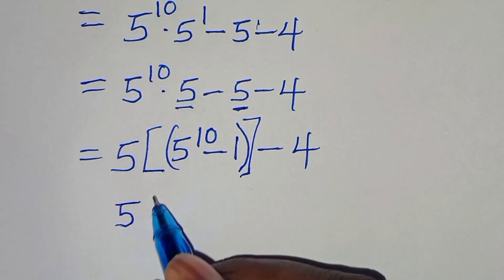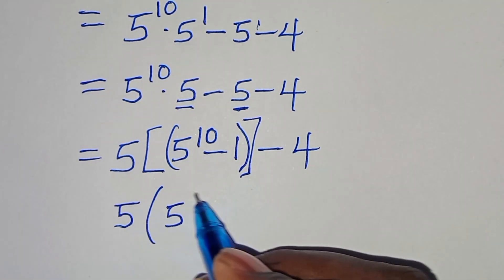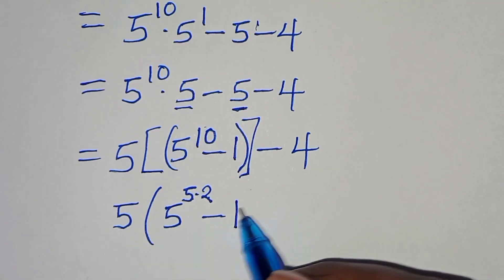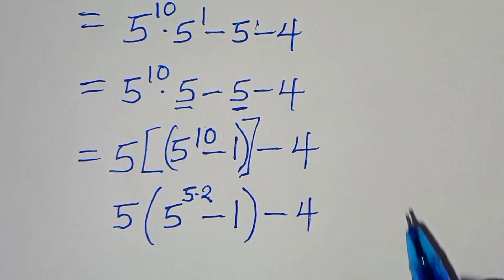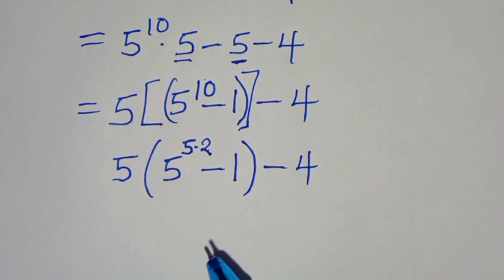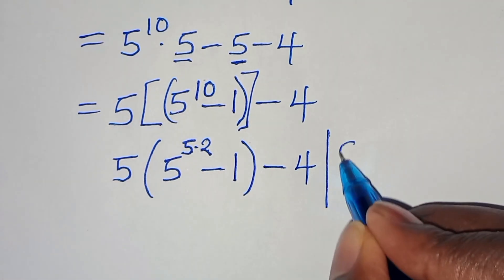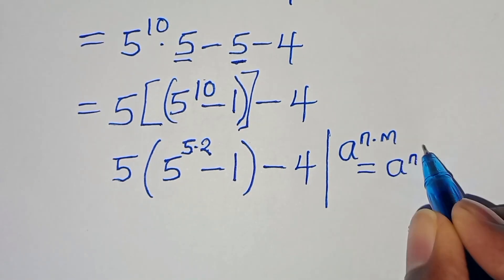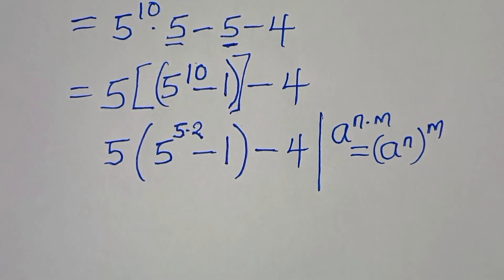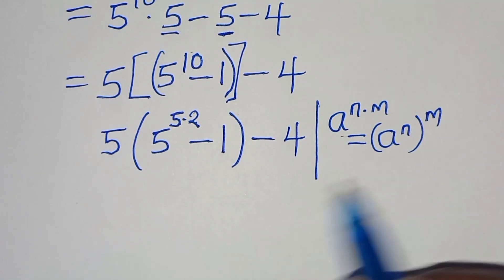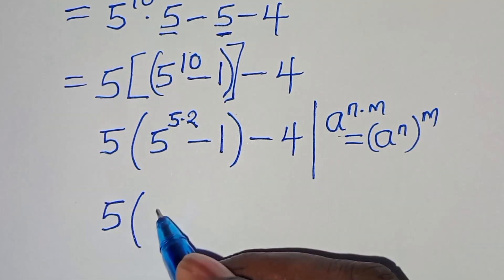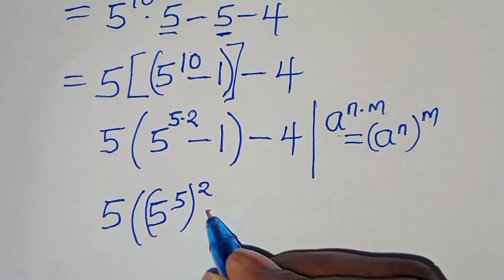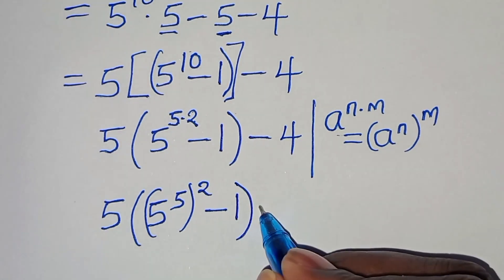Now, 5 to the power of 10 is the same as 5 to the power of 5 multiplied by 2. This is in the form of a raised to the power of n multiplied by m, which we can express as a to the power of n, raised to the power of m. Applying this exponent property, we have 5 times the quantity: 5 raised to the power of 5, then raised to the power of 2, minus 1, close parentheses, then minus 4.